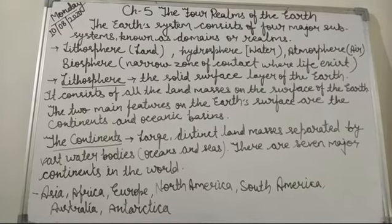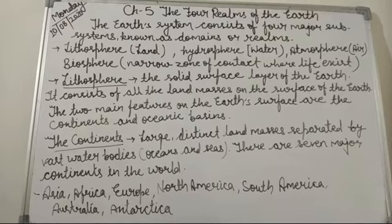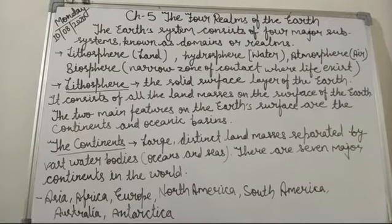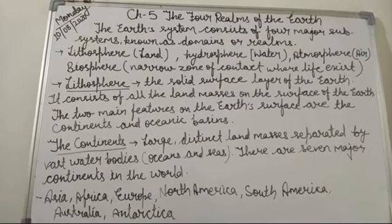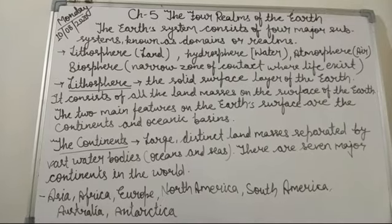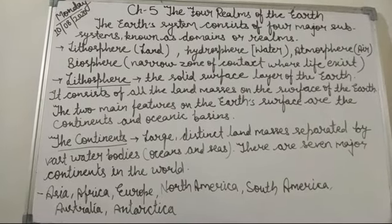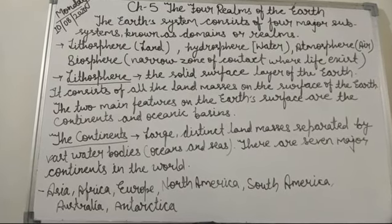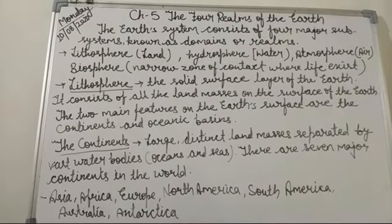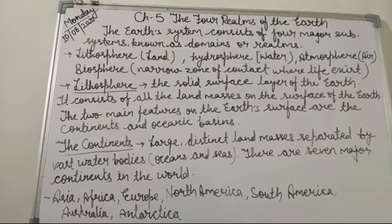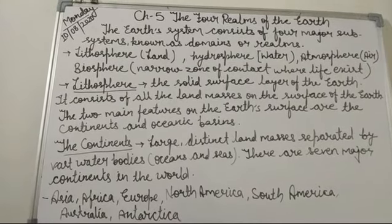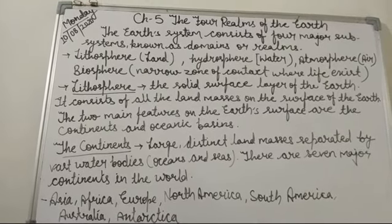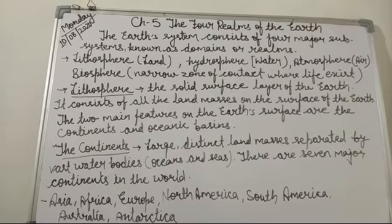The next continent is Europe. Europe is a smaller continent in comparison to Asia and it lies to the west of Asia. The Ural Mountains form the easternmost boundary of Europe. Europe is a peninsula, with water bodies surrounding it on three sides. These water bodies are the Atlantic Ocean, the Mediterranean Sea, and the North Sea. The Greenwich Meridian passes through this continent.